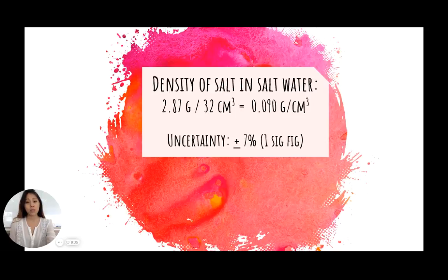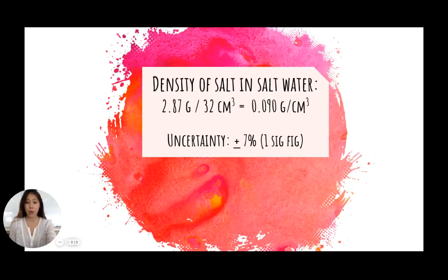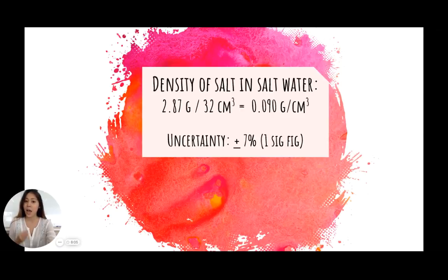In this case, we were able to find the uncertainty — the relative percentage uncertainty — to be plus or minus 7%, rounded to one significant figure. Otherwise, when we're given percentages like this one, it becomes really hard to quantify what 7% actually means.